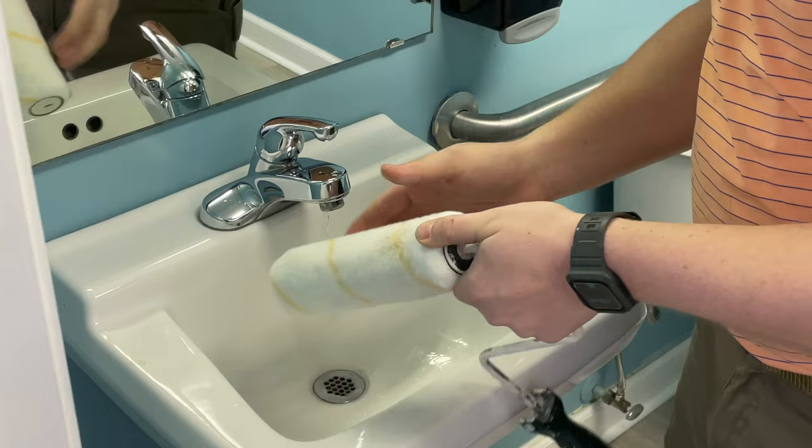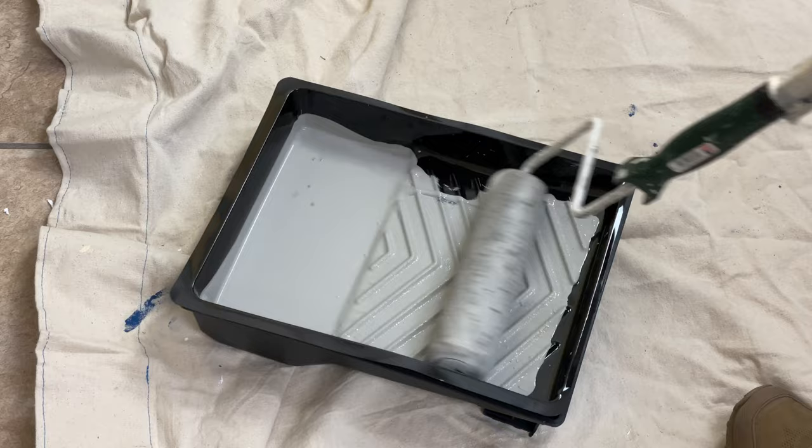Dip the roller several times so that the roller is entirely covered and has soaked in as much as it can. After each time you dip the cover, roll it onto the pan to make sure the paint penetrates into the cover.